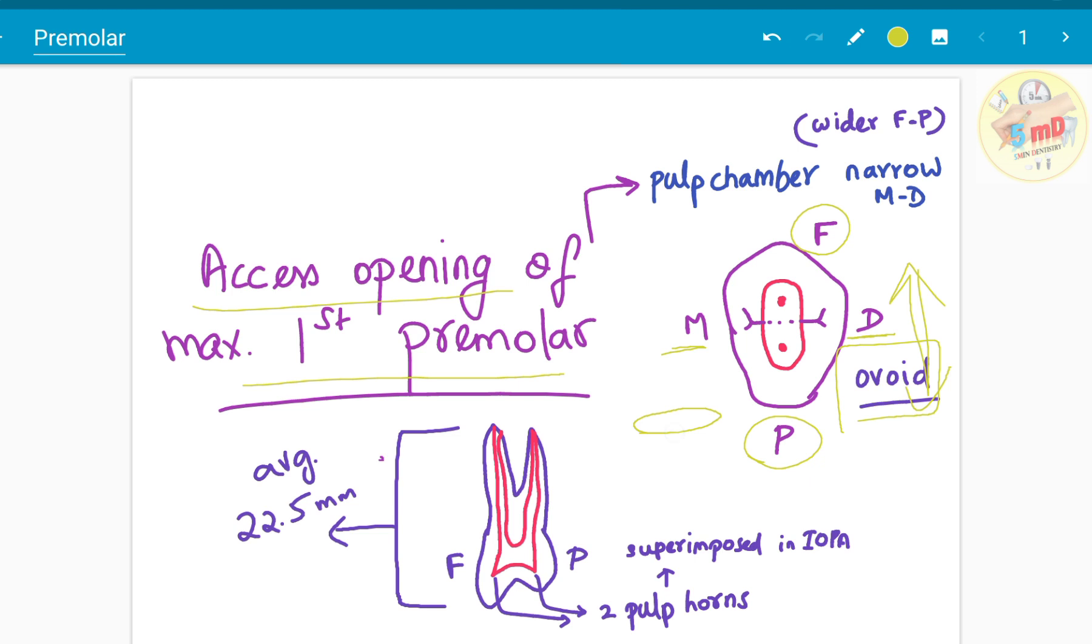Black's cavity preparation, which you will prepare along the grooves mesiodistally. But the access cavity preparation is in the direction longitudinal and opposite to the G.V. Black's cavity preparation direction.